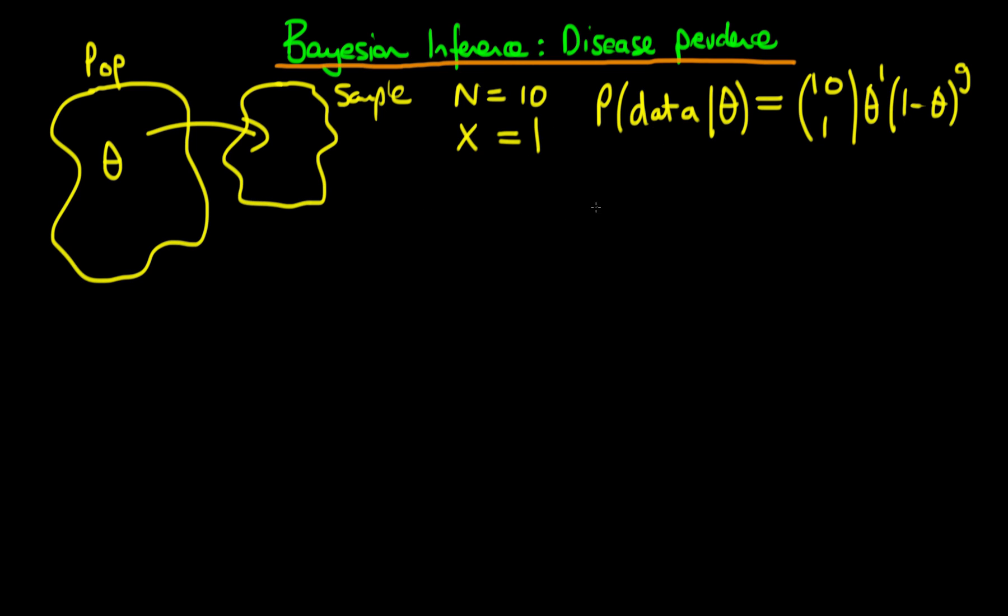We also need to pick a prior density in order to derive the posterior. So what could our prior be? Well let's assume that we don't really have any idea as to whether the disease occupies 100% or 0% in the population. So what we're actually going to give here is a uniform distribution. But instead of just specifying as a uniform distribution, we're going to specify it in terms of a beta distribution. Because remember that a Beta(1,1) distribution is exactly the same thing as a uniform distribution on 0,1.